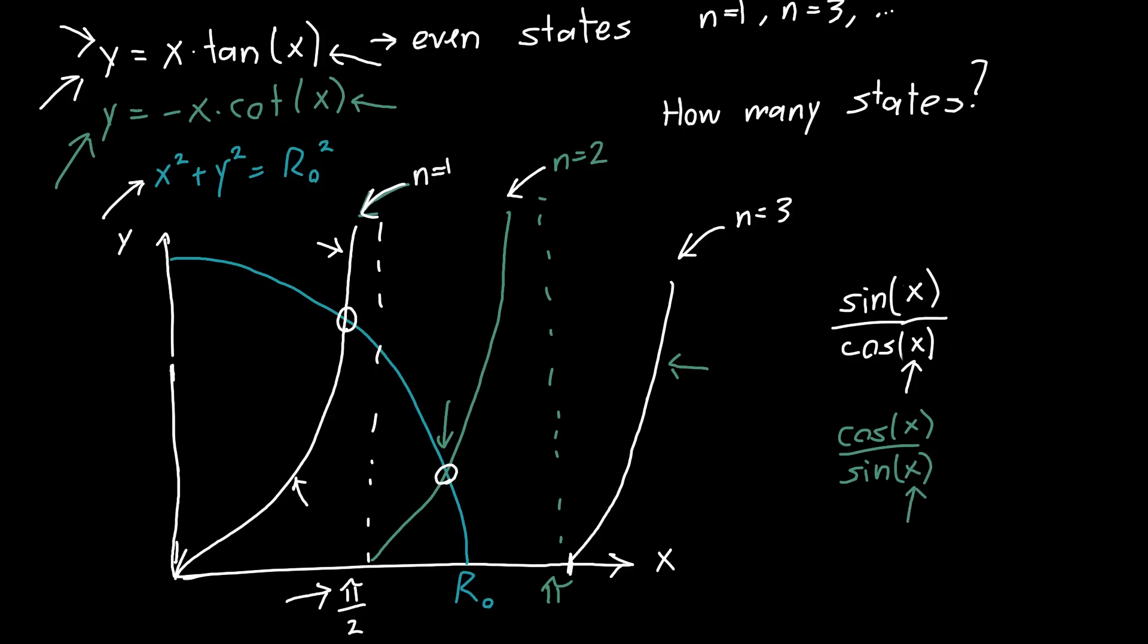And so we start to asymptote to pi and so on and so on for future tangents and cotangents. And so the value of this r0, the radius of this circle, as it gets smaller will have fewer supported states, as it gets larger will have more supported states. And the intersection of the circle with each of these curves always gives us the energy of our states.